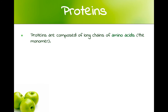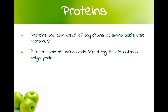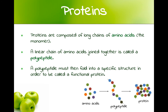Moving on to proteins — proteins are composed of long chains of amino acids, so the monomer for a protein is an amino acid. A linear chain of amino acids joined together is called a polypeptide. A polypeptide has to fold into a specific structure in order to actually be a functional protein, so you've got various amino acids joined together to make a polypeptide, which then folds in amongst itself to make the functional protein.